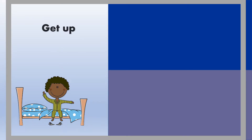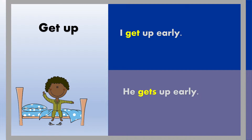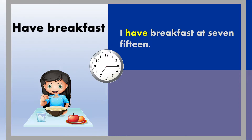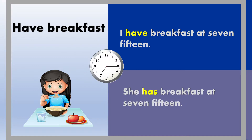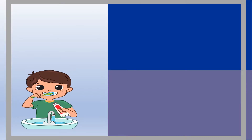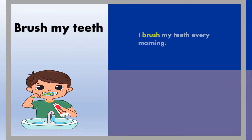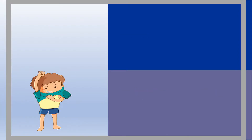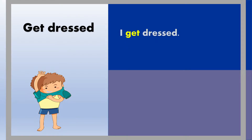Get up: I get up early. He gets up early. Have breakfast: I have breakfast at 7:15. She has breakfast at 7:15. Brush my teeth: I brush my teeth every morning. He brushes his teeth every morning. Get dressed: I get dressed. He gets dressed.